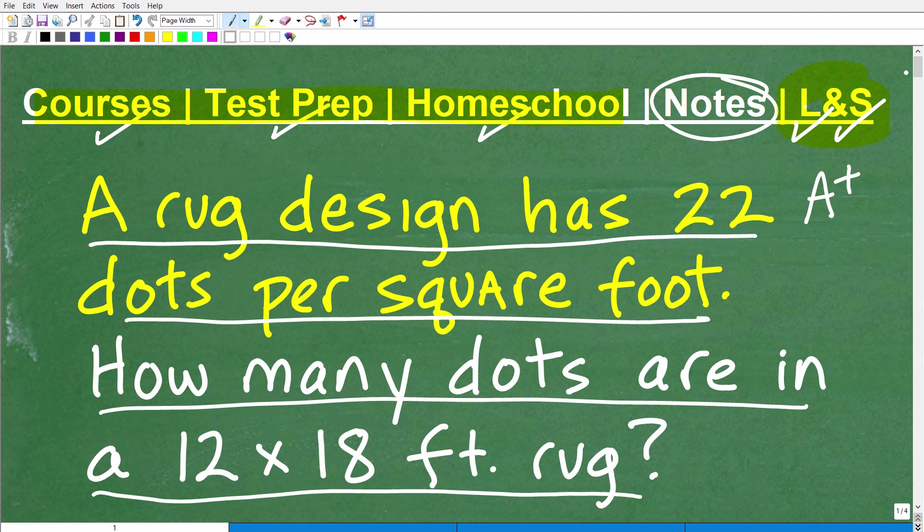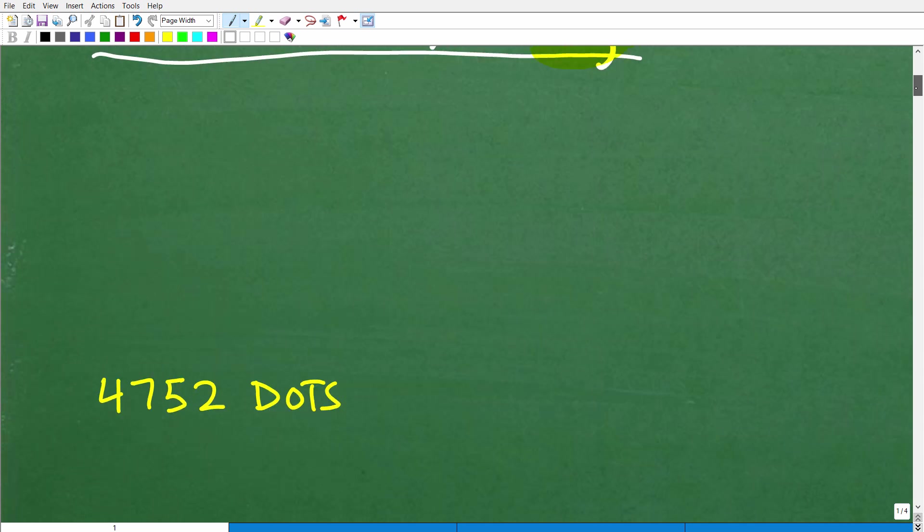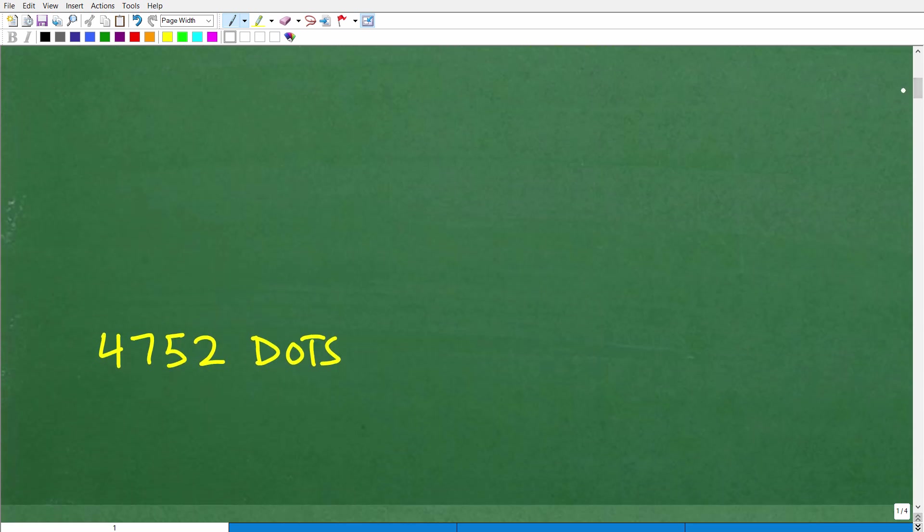Okay, so let's get into this problem. And what are the first three steps to any math word problem? Well, step number one is to read the problem. Step number two is to reread the problem. And step number three is to make sure you understand exactly what the question is. So you're probably going to have to read the question again. So a rug design has 22 dots per square foot. How many dots are in a 12 by 18 foot rug? So how many dots are in this rug? That is the question. Let's go ahead and show you the answer right now. All right, so 4,752 dots. That is the answer.